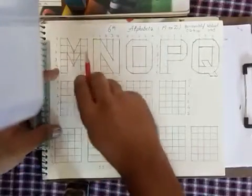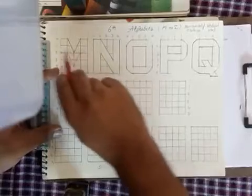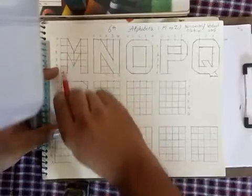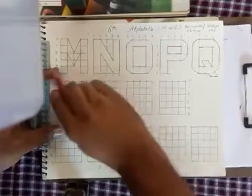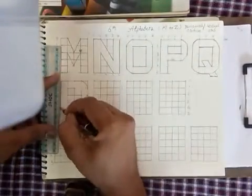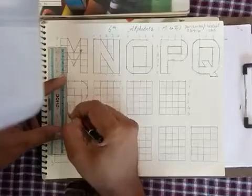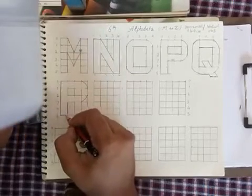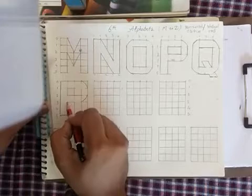In this, I am not erasing extra lines like we erased in P. I am erasing only P shape. I hope you can see the P shape in this. I am not erasing.